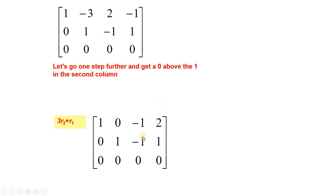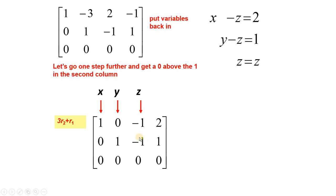The corresponding changes have been made. Now we write the equations: these are the coefficients of x, these are for y, these are for z. From the row echelon form we write the system of equations: 0z is equal to 0 means z is equal to z (arbitrary); y minus z is equal to 1; x minus z is equal to 2. Since z is arbitrary, we can take any value for z. y and x can be written in terms of z. When the augmented matrix has this form with all zeros, the system gives infinite solutions.